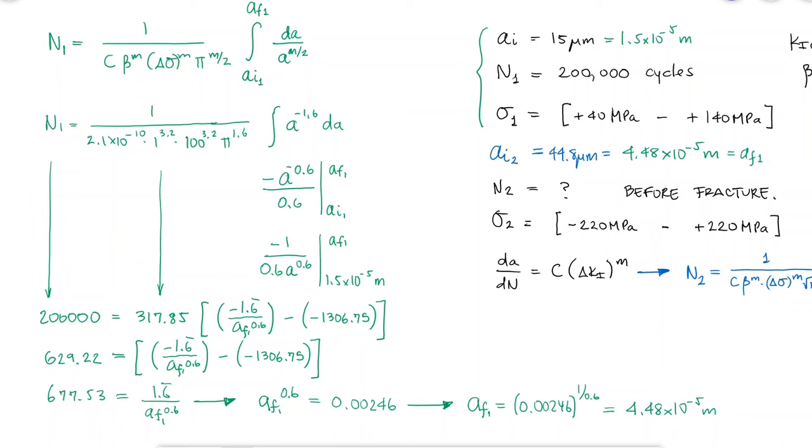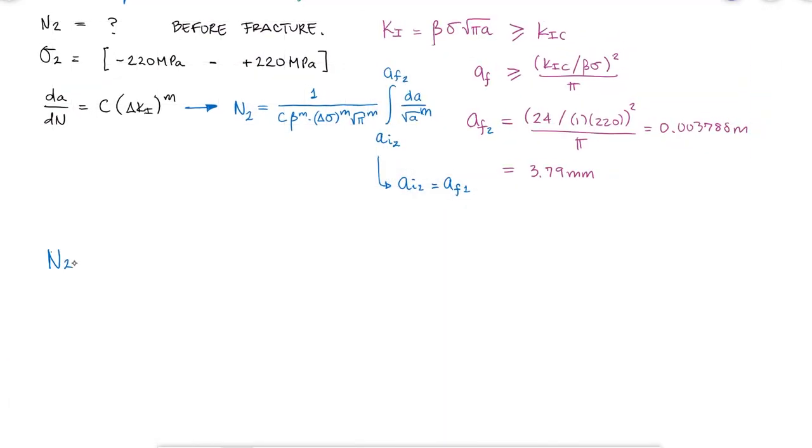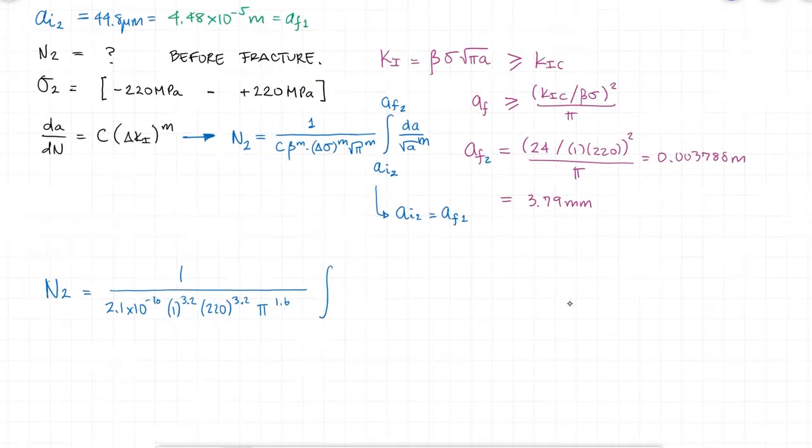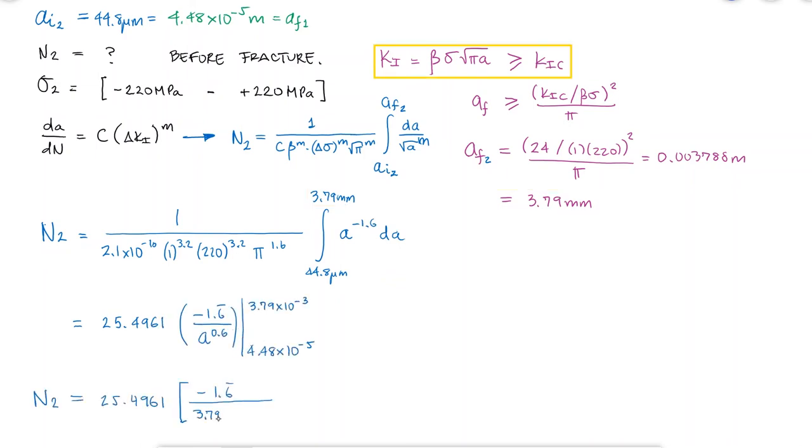Going back to our original Paris equation in blue, we now have everything we need to calculate the number of cycles till the crack reaches a length that would cause the part to crack because the intensity factor surpassed the fracture toughness of the material.